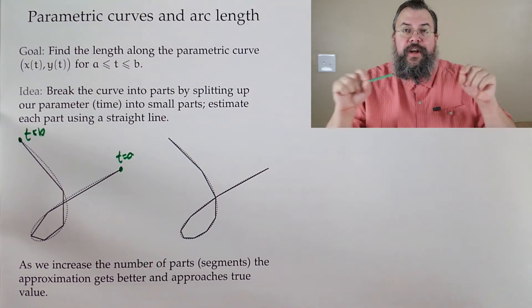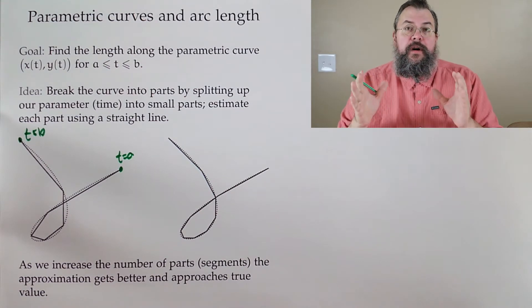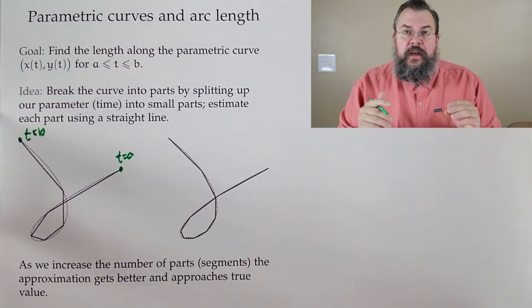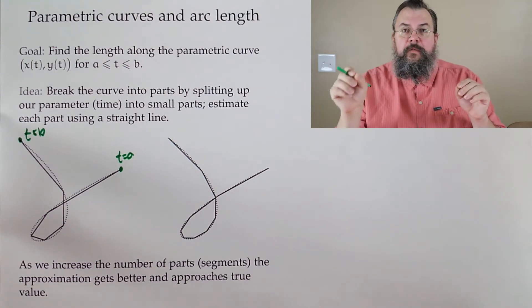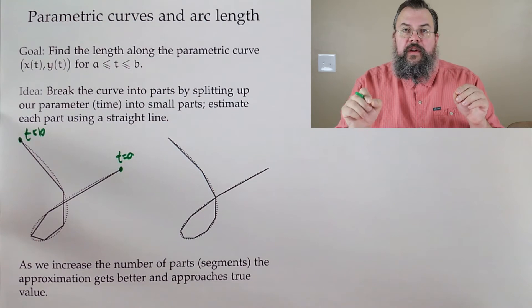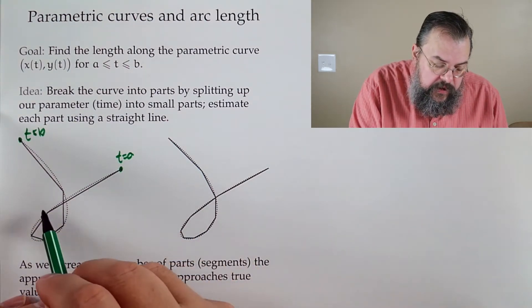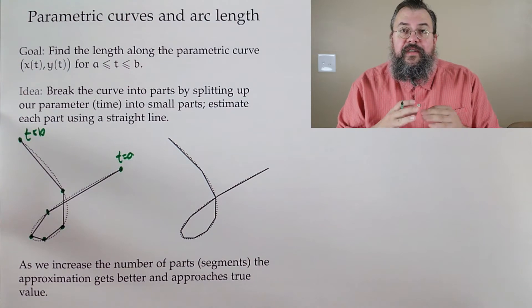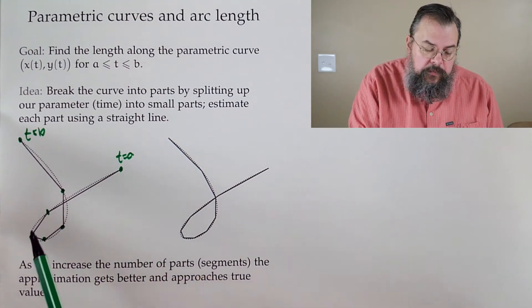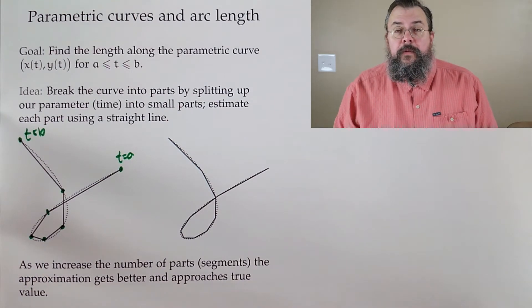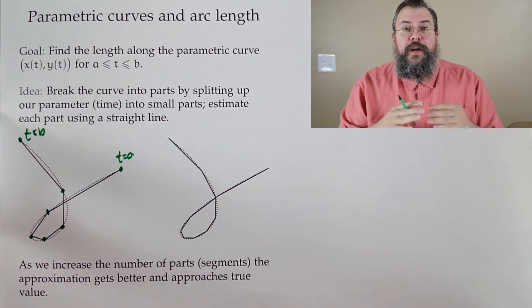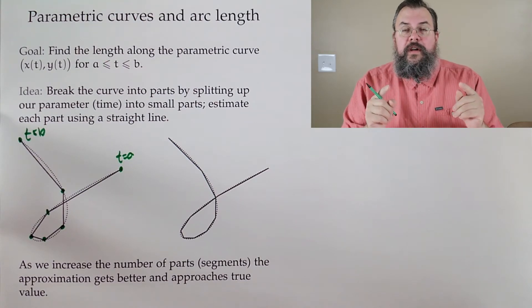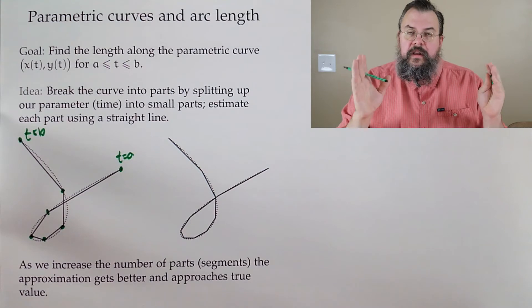But what we can do is mimic that idea and say it would be great if it was straight. So what we'll do is we'll chop our parameter. In other words, we're going to subdivide time up into little parts. Instead of going smoothly from one to the other, we're just going to hop along to those points in time. As I move along, here's my next point, jump to my next point, jump to my next point. Sometimes it looks like we move a lot, other times we hardly move at all. That's because we're chopping up not our curve, but we're chopping up our parameter. Sometimes parts of the curve we move faster so we cover more distance, whereas other times we move slower, we cover less distance.